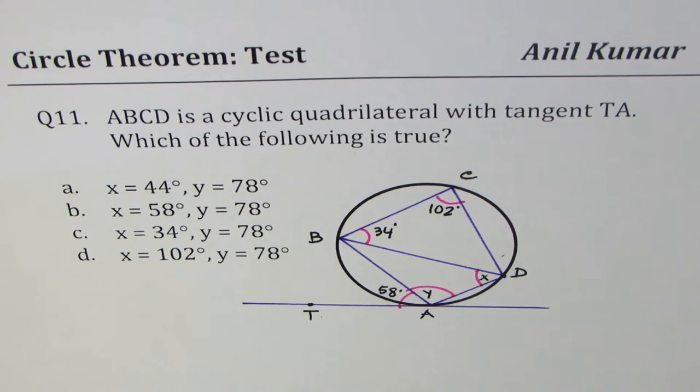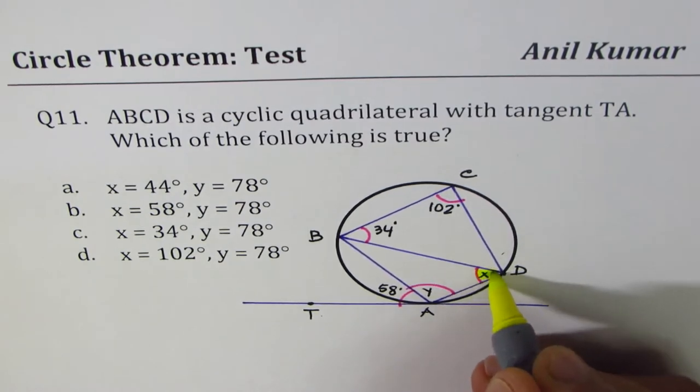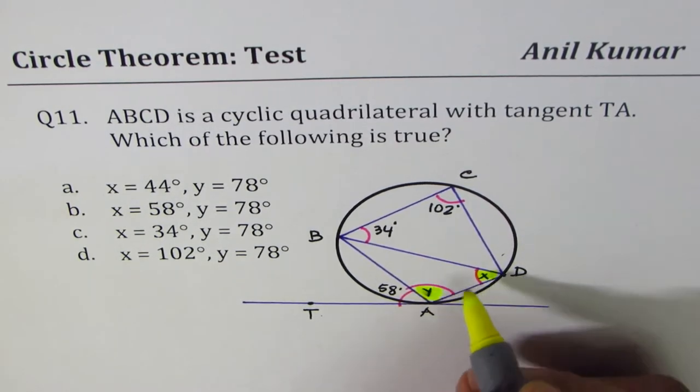ABCD is a cyclic quadrilateral with tangent TA. Which of the following is true? X and Y values are given to us. So we need to actually find the values of X and Y in the given situation.